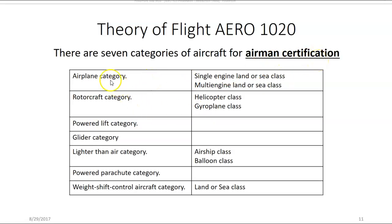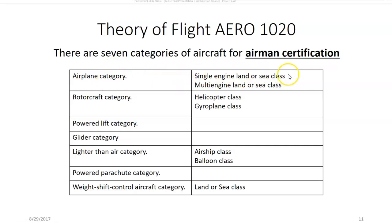When discussing aircraft category and class as it applies to airman certification: airplane is a category, rotorcraft is a category, powered lift, glider, lighter than air, powered parachute, and weight shift control aircraft are all categories. Within those categories you have single engine land class or multi-engine land class for airplane.